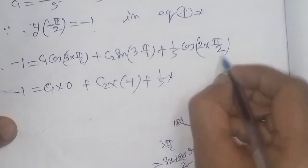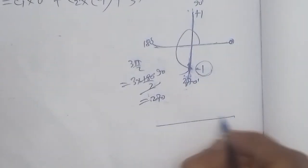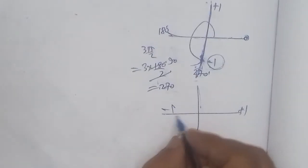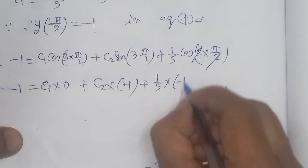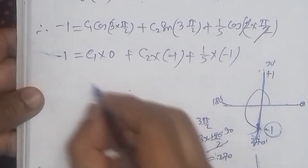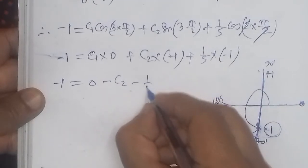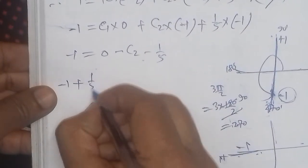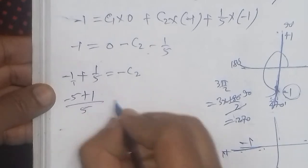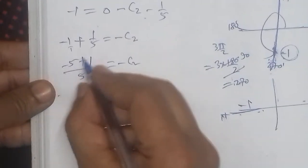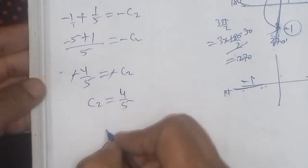Substituting into the second condition: -1 = 0 + c2·(-1) + (1/5)·cos(π) = -c2 + (-1/5). So -1 = -c2 - 1/5, which gives -c2 = -1 + 1/5 = -4/5, therefore c2 = 4/5.